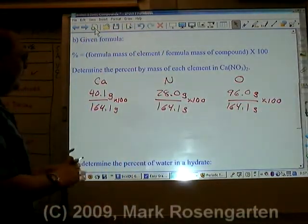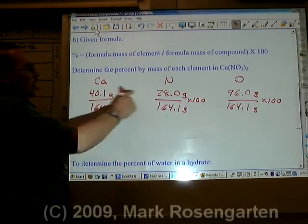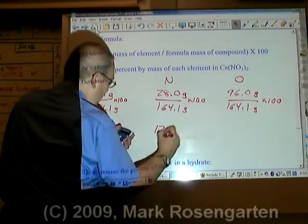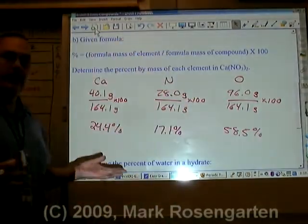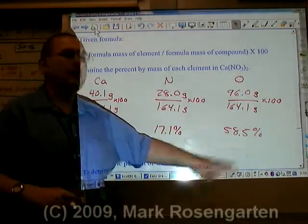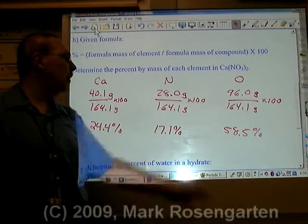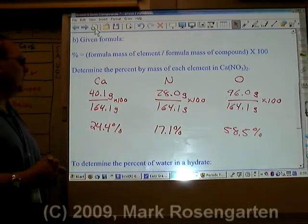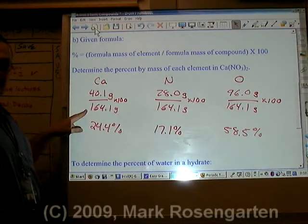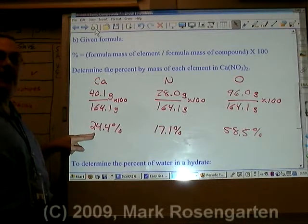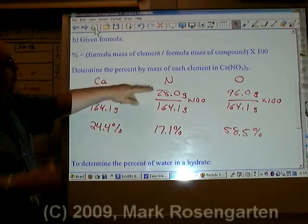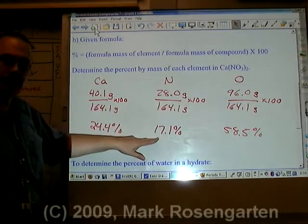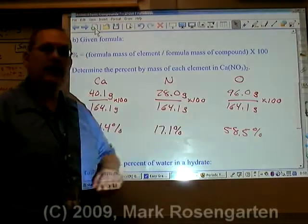Let's get the percent of each element now. Each one will have three sig figs, taking each to the tenths place. This does add up to 100: 5 plus 1 plus 4 is 10. Calcium, which makes up 40.1 of the 164.1, makes up 24.4% of the compound's mass. Nitrogen, which makes up 28 out of 164.1, makes up 17.1% of the compound's mass. And oxygen makes up 58.5%.